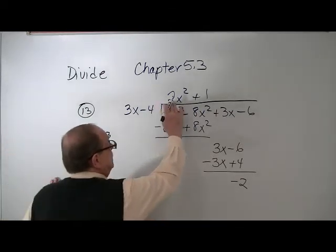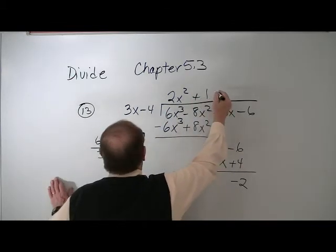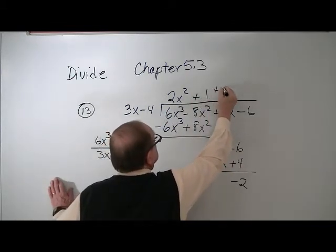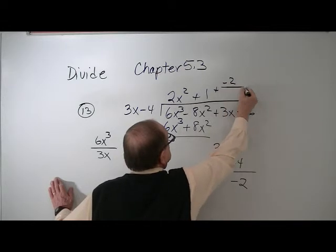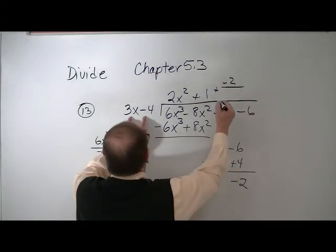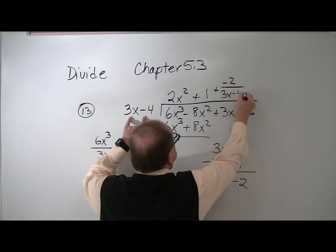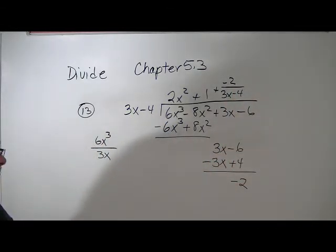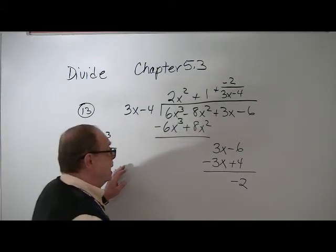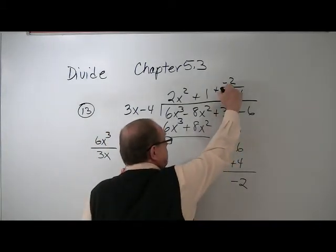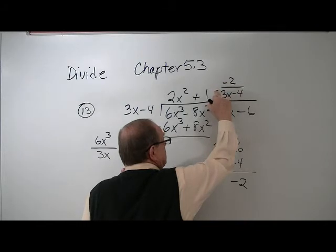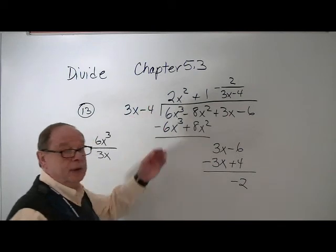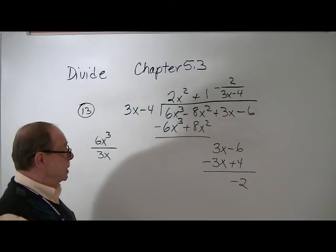So our answer would be this. And then we could say plus a negative 2 over 3X minus 4. Now that's one way to write the answer. Another way might be to take this negative sign from here, put this negative sign over there. And that would be another way that is correct as well.